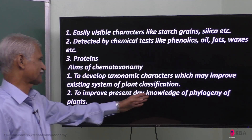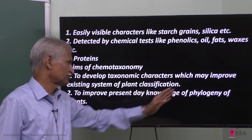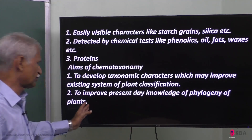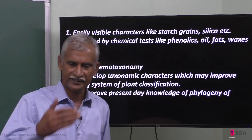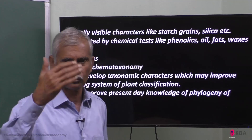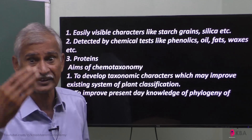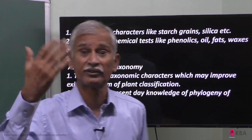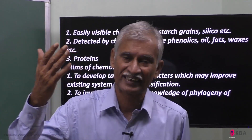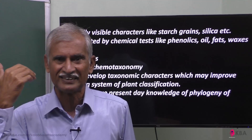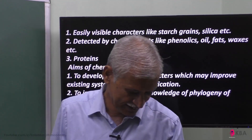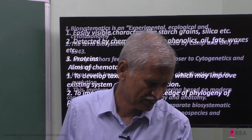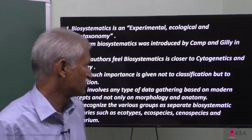Chemo-taxonomy also helps to improve the present-day knowledge of phylogeny of plants — our ancestral development, evolutionary origins, phylogenetic characters, and chemical characters — to help us understand plant evolution.